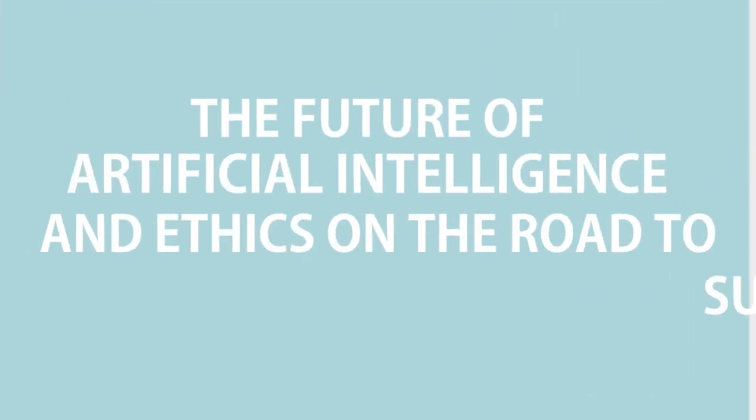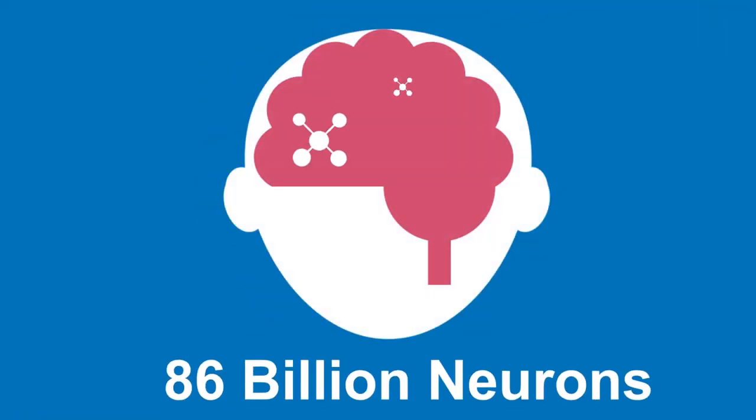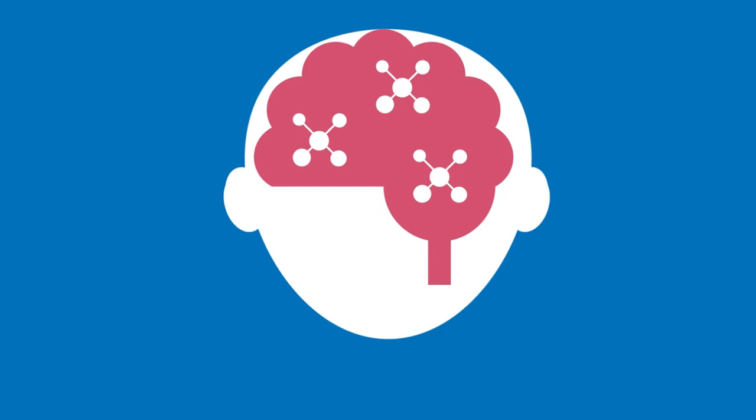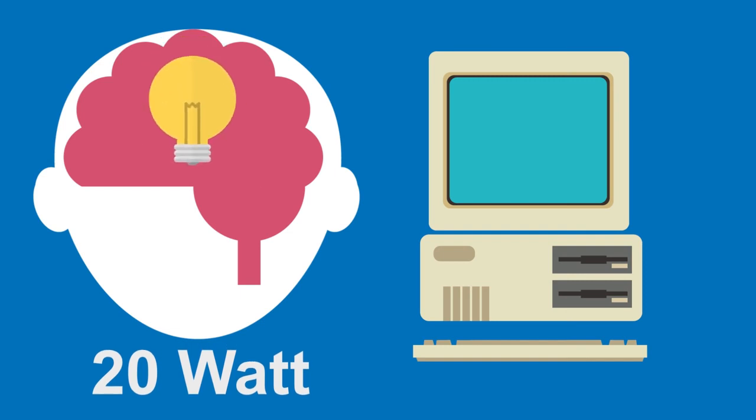The future of artificial intelligence and ethics on the road to superintelligence. The human brain consists of around 86 billion neurons. It beats the most sophisticated computer in perception, efficiency, and speed, using as little energy as a small 20-watt light bulb.